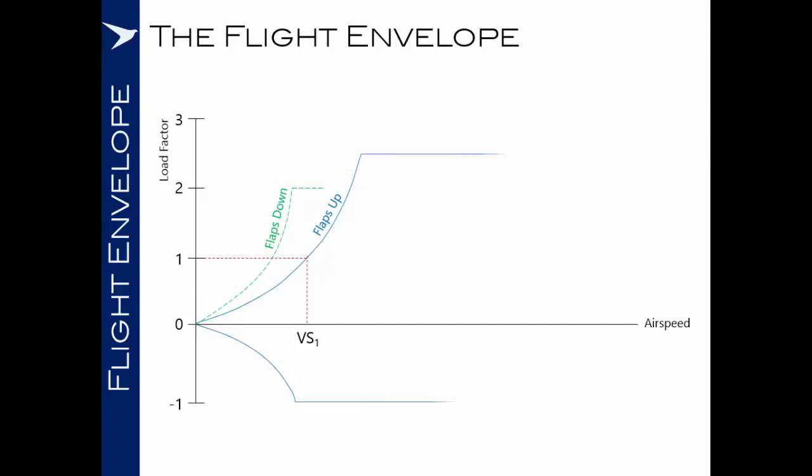The maximum permitted load factor of the aircraft will dictate the top and the bottom of this graph. In this case, according to normal certification standards, we have a maximum positive load factor of 2.5 and a maximum negative load factor of minus 1.